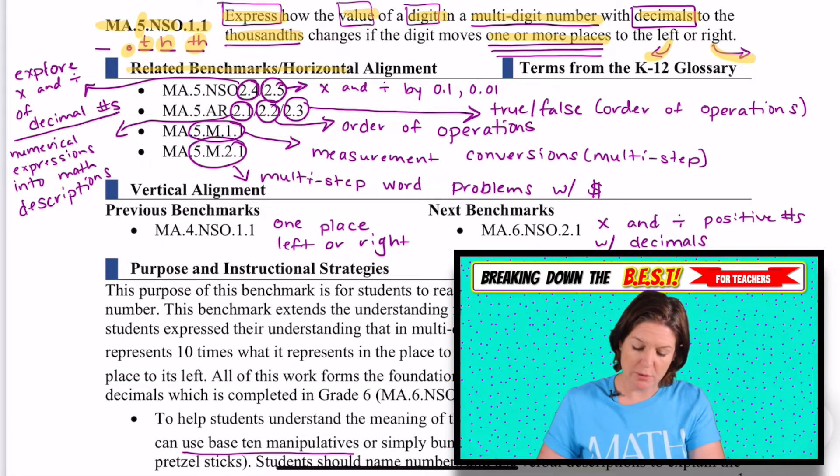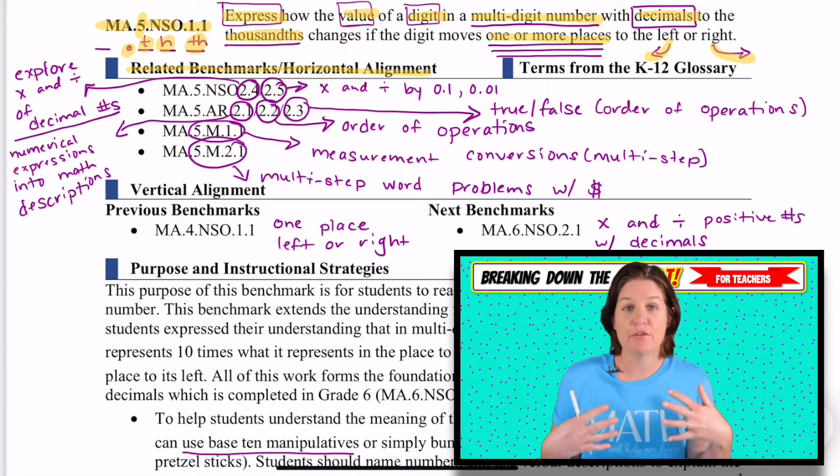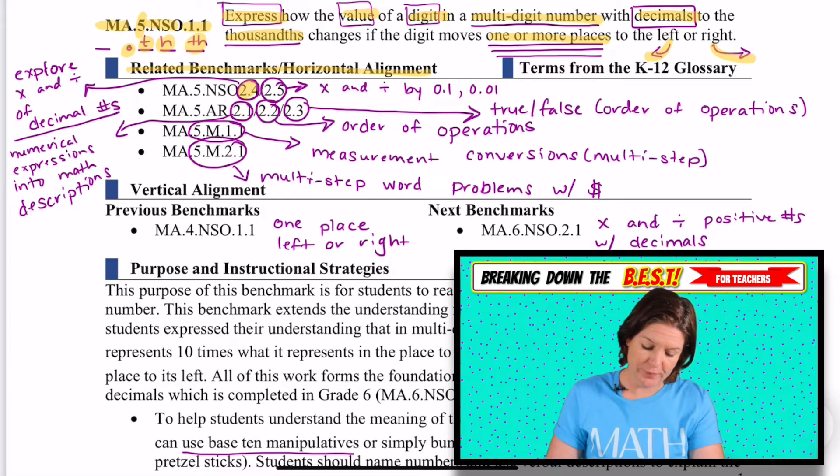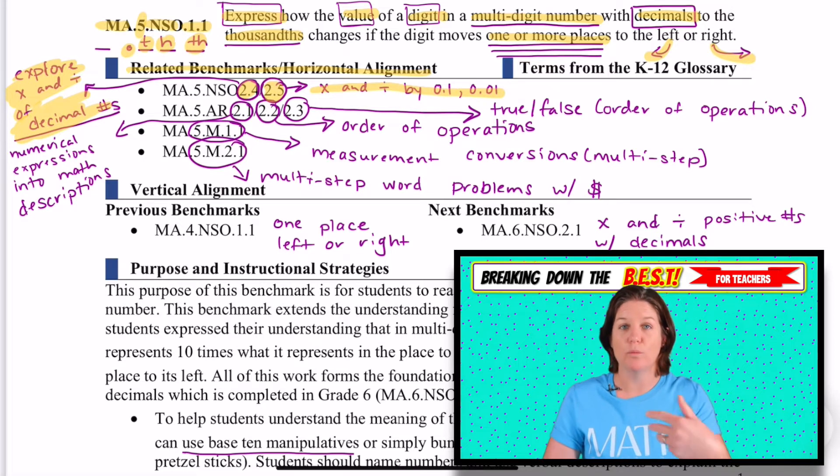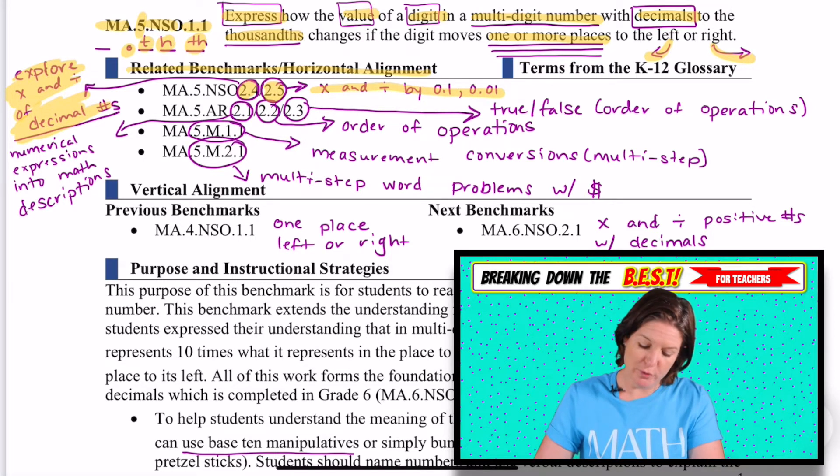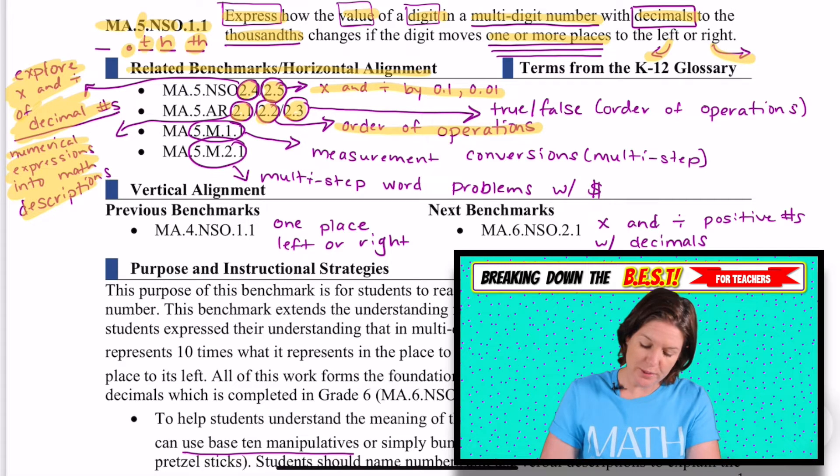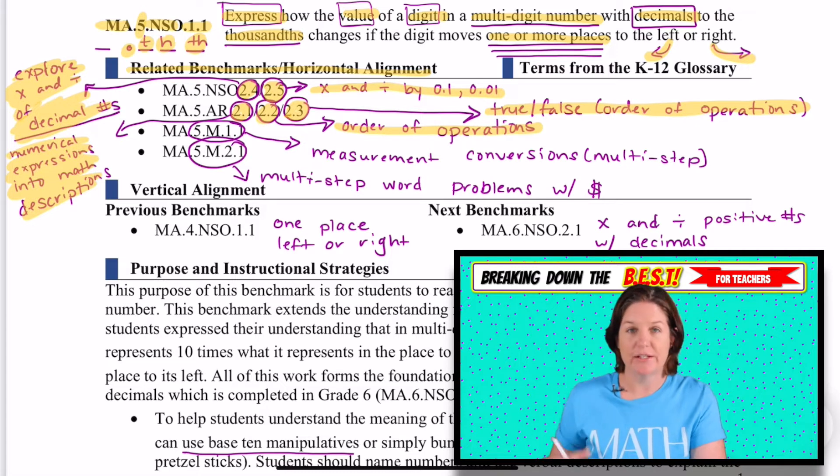Now this section right here, related benchmarks and horizontal alignment, these are other fifth grade standards that are related to the standard that we're going over today. You can see there's a lot. So I'll just kind of point out what each one is. This NSO.2.4, that's exploring multiplication and division of decimal numbers. 2.5 is where we are multiplying and dividing by one-tenth and one-hundredth. Then we move on to our AR standards. 2.1 is numerical expressions and mathematical descriptions. 2.2 is more of an order of operations. 2.3 is true or false with order of operations. And I'll show you how in an example that they provide in this document how that order of operations will kind of come into play.